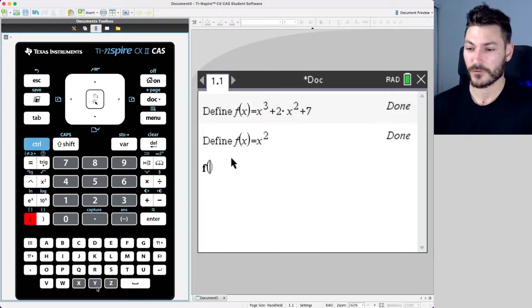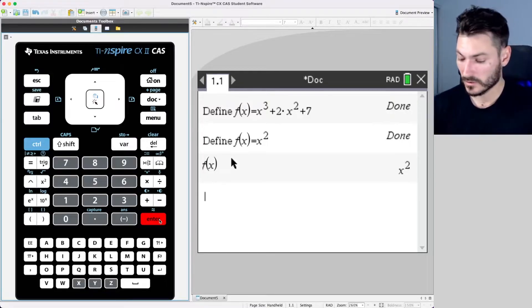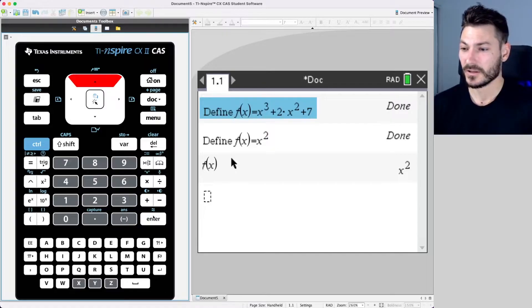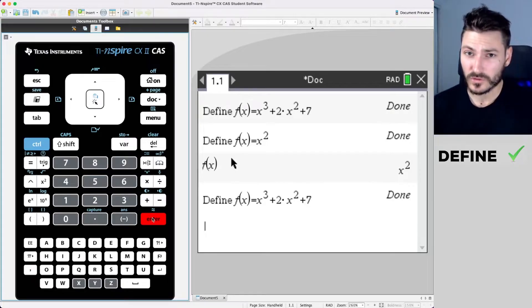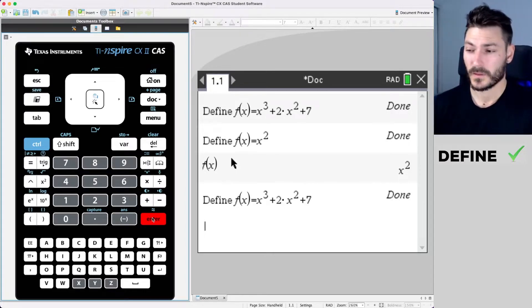So now if I just type f(x) and hit enter, it's going to output the newest function that I've defined. I don't want that so I'm going to navigate up by using the up arrow, hit enter on my previous one and redefine it. So just be careful if you want to define another f(x), you can create a new problem to do that.